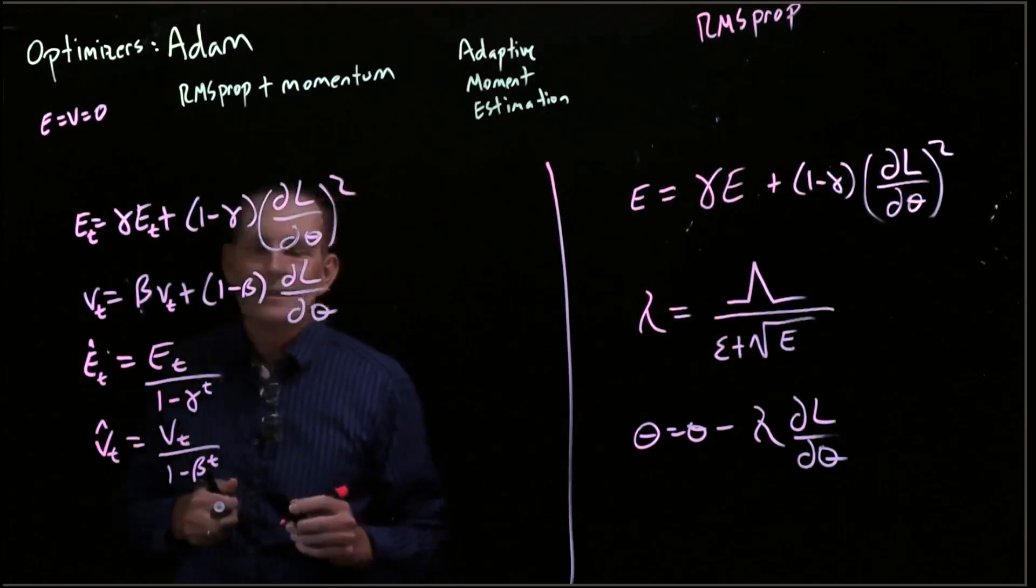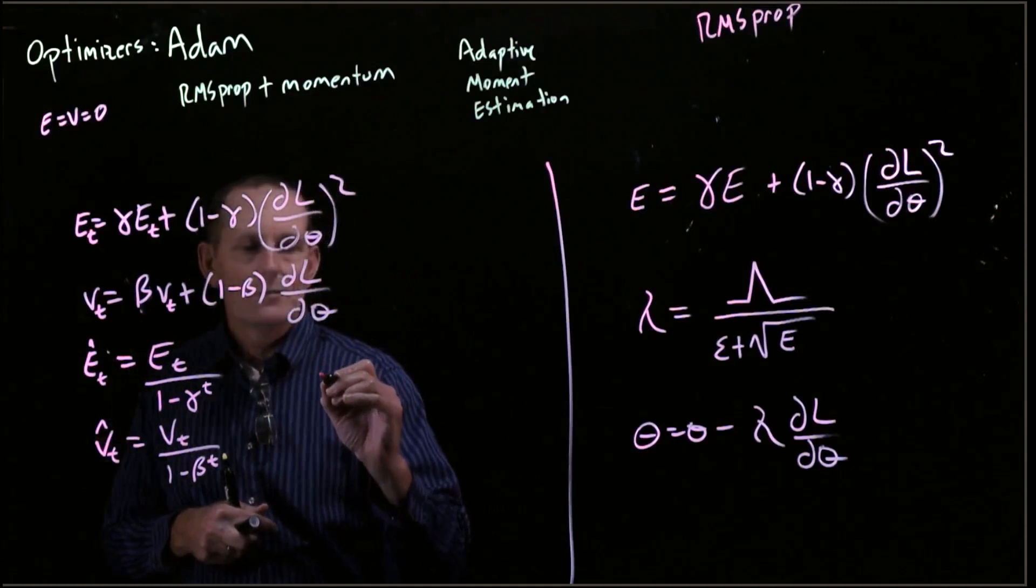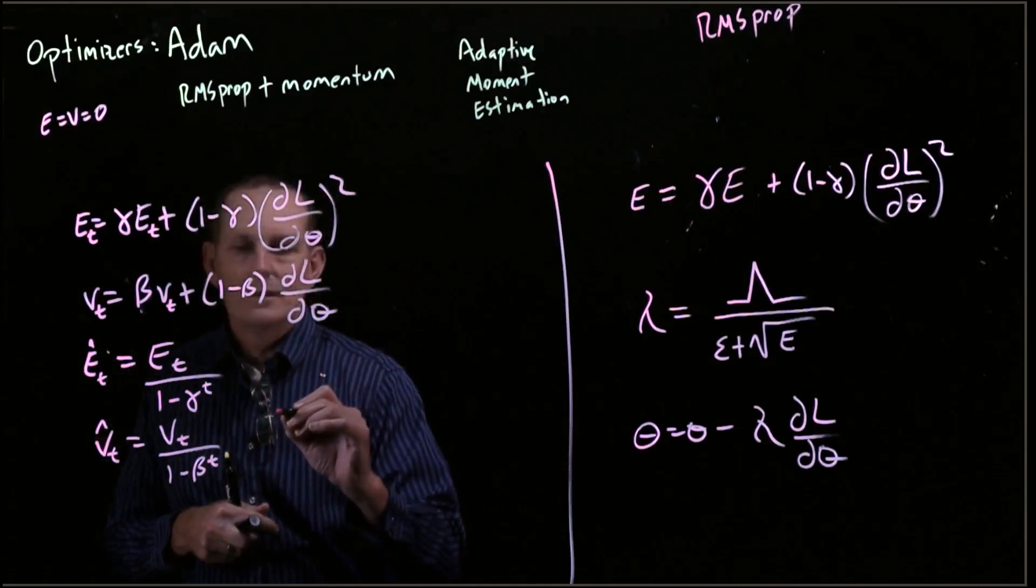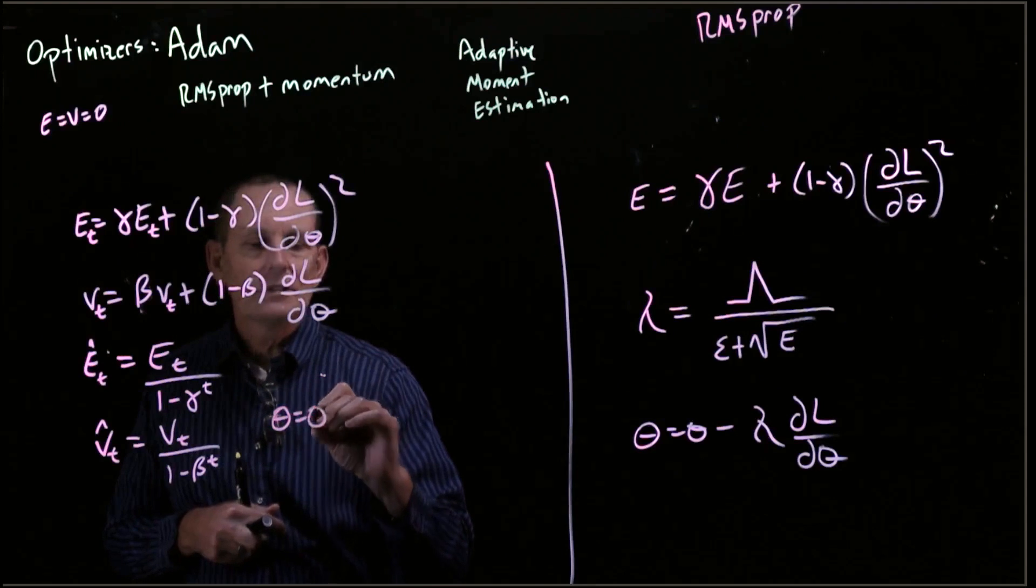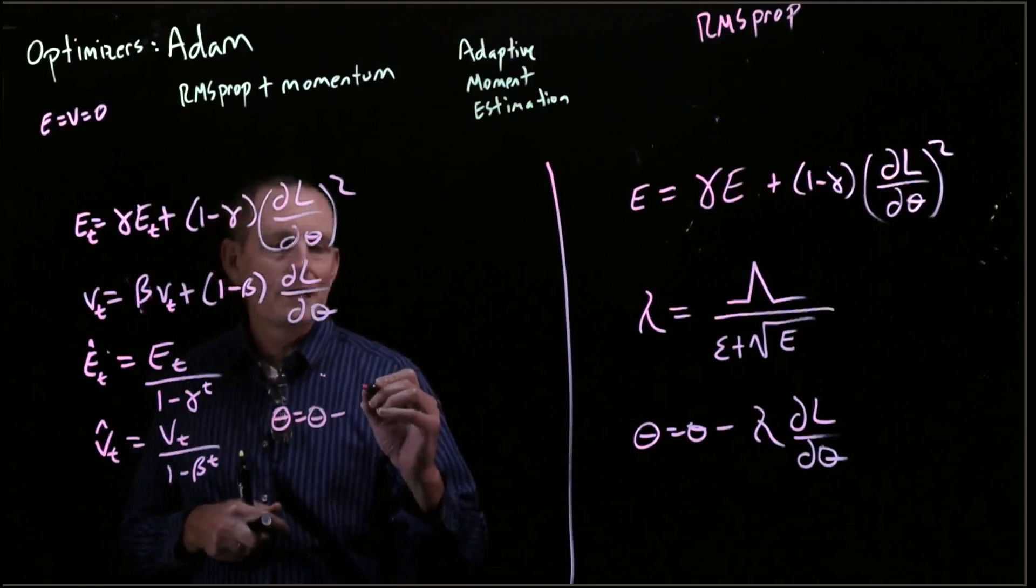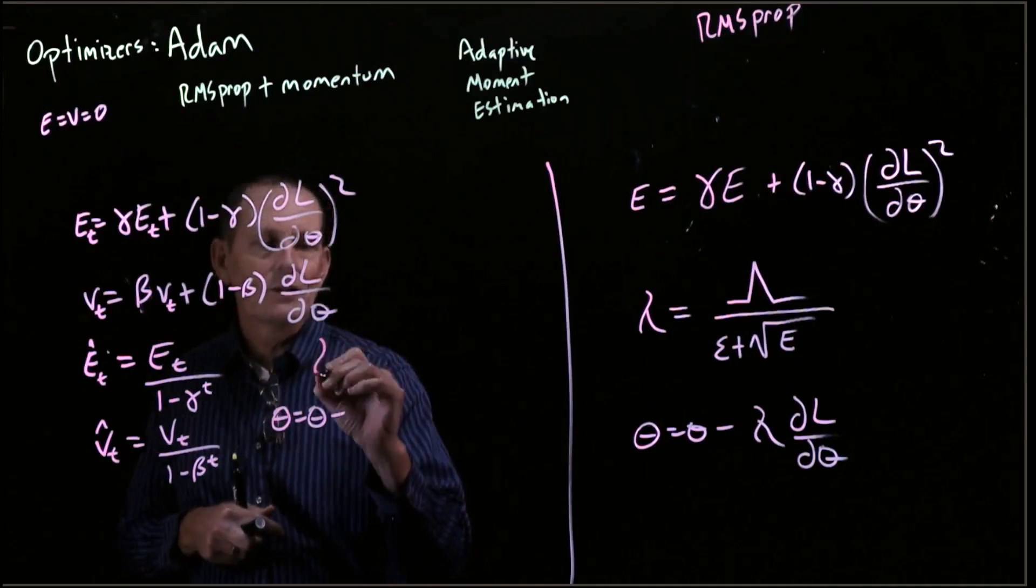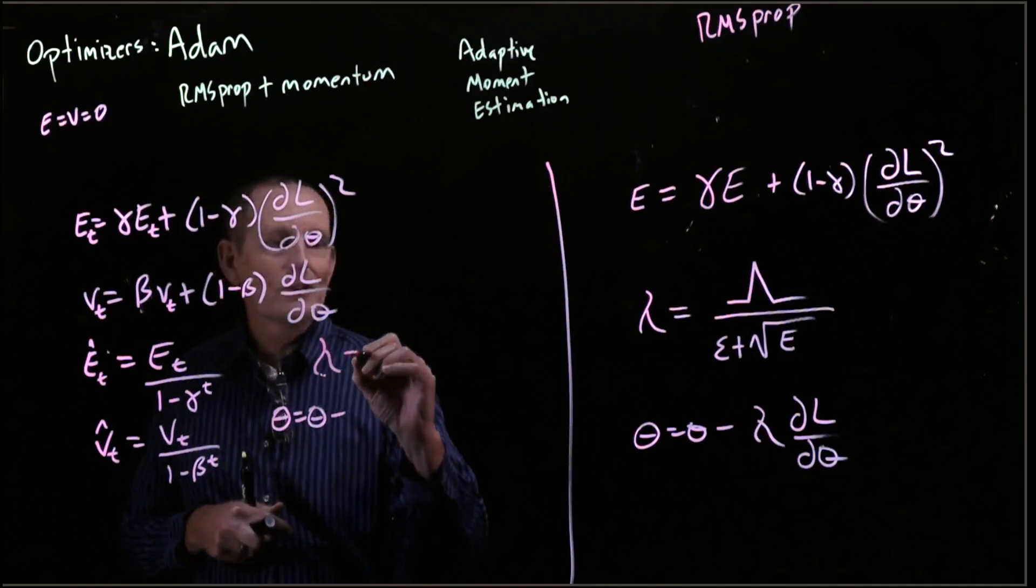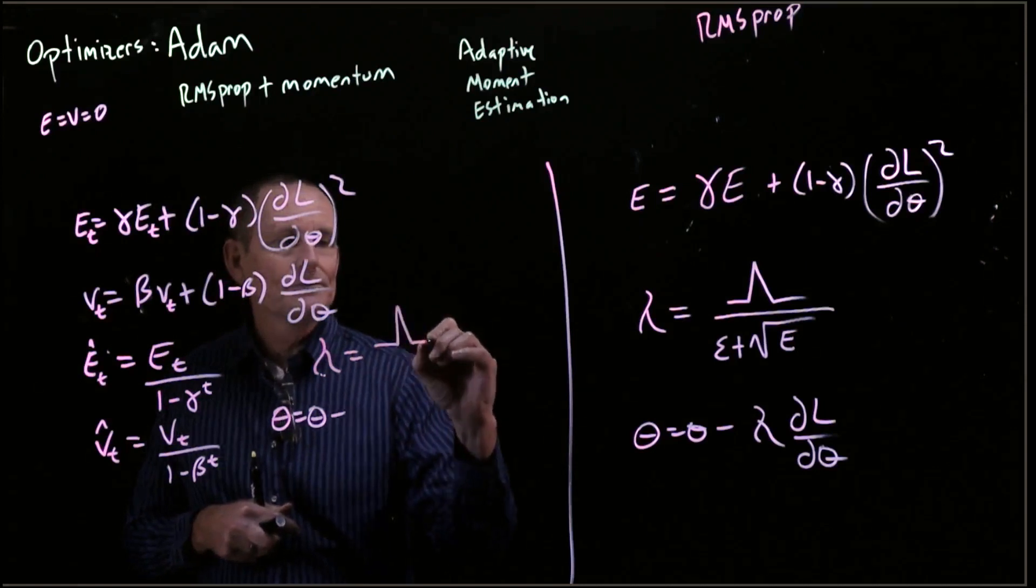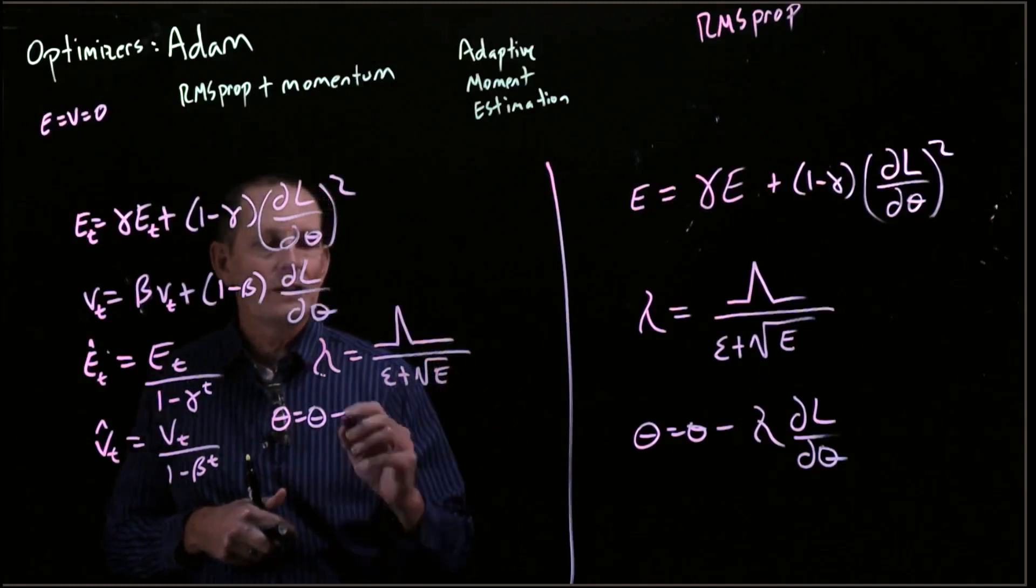And then what we do is go ahead and say, we have theta equals theta minus, well, our learning rate. Let's just go ahead and write our learning rate separately. So our learning rate equals our lambda over epsilon plus the square root of E.